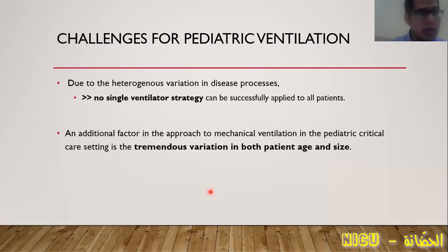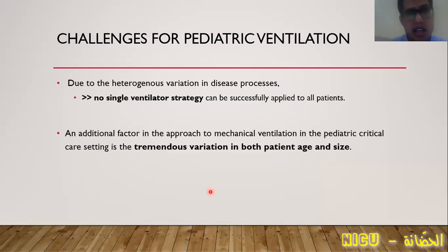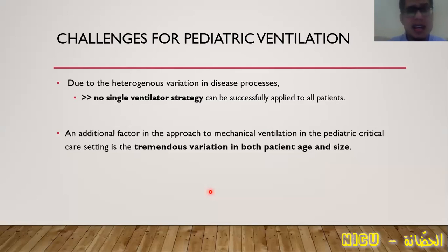We are dealing with different age groups: infants, toddlers, preschool children, school children, even teenagers and adolescents. There is heterogeneous size, different age, and different physiological parameters for each patient. At the same time in your PICU, you can admit one infant of two or three months weighing four or five kilograms needing ventilation, and at the same time admit an adolescent of 12 or 14 years old needing ventilation. There is a big difference between the two age groups in physiological parameters.